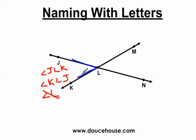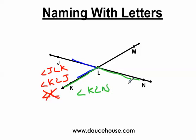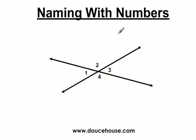Let's look at the angle on the bottom. There are two ways to name it. Starting from K, going to L, then to N, I could call this angle KLN. The alternative is to swap the outer letters: going from N to L to K gives the same angle, so it can also be called angle NLK. Keep in mind the vertex — where the angle bends — always has to be the middle letter. Using numbers makes this easier: the angle labeled 2 is angle two, the one labeled 3 is angle three, angle 4 is the bottom angle, and angle 1 is on the left.